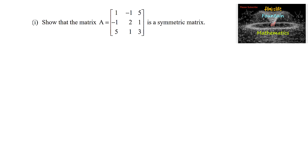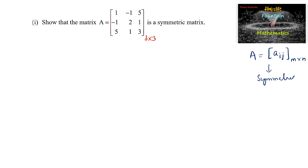Show that the matrix A is equal to 1, minus 1, 5, minus 1, 2, 1, 5, 1, and 3 is a symmetric matrix. The order of the given matrix is 3 by 3, and we know that a matrix A, equal to Aij with order m by n, is said to be symmetric if A transpose is equal to A.